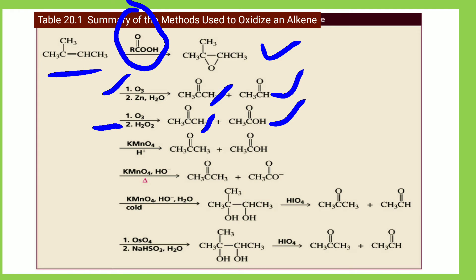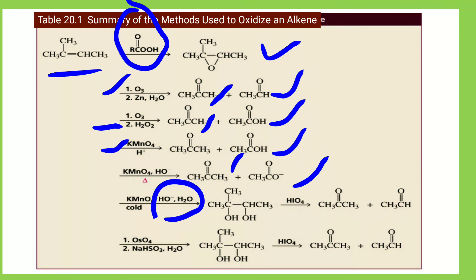Here is a summary of methods used to oxidize alkenes using KMnO4. When KMnO4 reacts in the presence of acid (H+), we get a ketone and an acid. Under heating or basic conditions, we get a ketone and an acetate compound. Under cold conditions with OH⁻ and water, we get a diol. This diol, when reacted with HIO4, gives ketones and aldehydes.